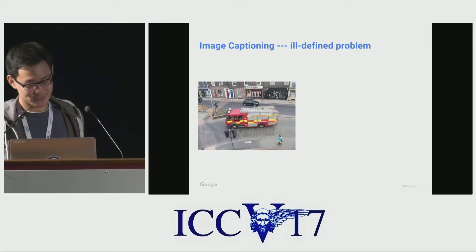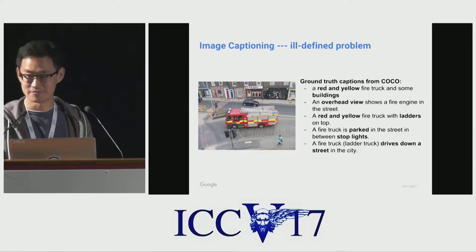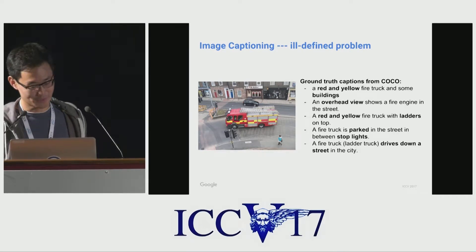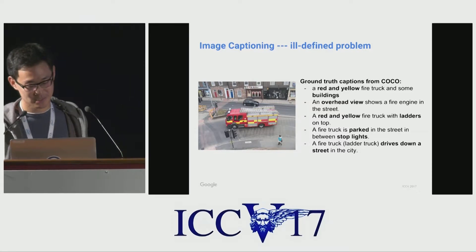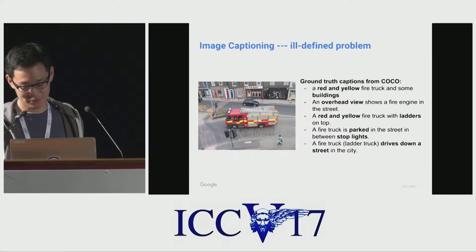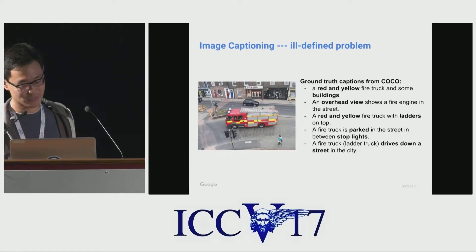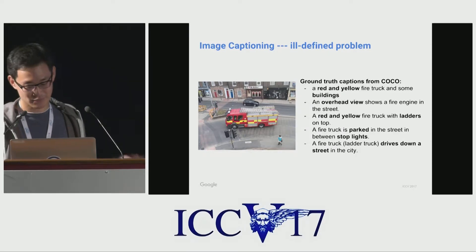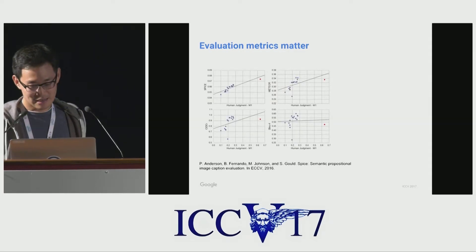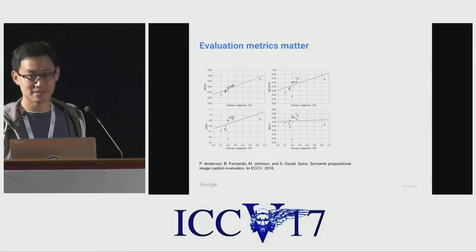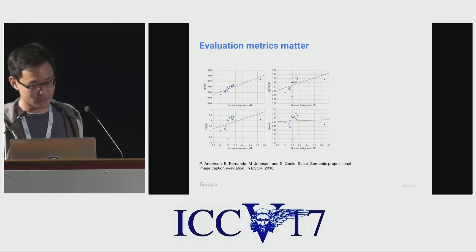Image captioning is an interesting problem that sits at the intersection of language and vision, but it's also an ill-defined problem. For a given image, there are many correct caption sequences, as shown in examples from the COCO dataset. We can see that each sequence focuses on a different aspect of the scene, and this makes evaluation very difficult.